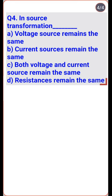In source transformation, the value of the voltage and current sources change when converting from voltage to current source and current to voltage source, but the value of the resistance remains the same — so option D is the right one.